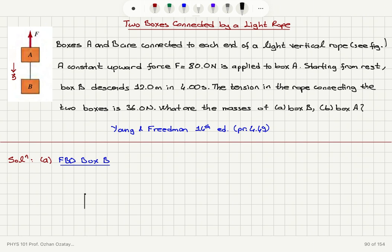Mass of box B times g. Box B then feels the tension in the rope, tension T. And this is the y-axis. So, the net force on the y-axis must be equal to tension minus the weight of box B, mBg.